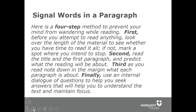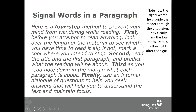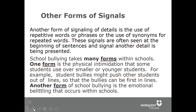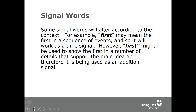Here the signal words are shown in the same paragraph we've looked at already. We can see that 'four-step' signals us to look for four things, and we can see the signals 'first,' 'second,' and so on. Note how the signal words guide the reader through the discussion — they clearly mark the four steps and details follow right after the signal in the very same sentence. Other methods that signal details are forthcoming include the use of bullets, lettering, or numbering. In another example, repetition of the word 'form' signals the details to take note of. Some signal words alter according to context — for example, 'first' may mean the first in a sequence of events as a time signal, or it might indicate the first in a number of supporting details and therefore serve as an addition signal.